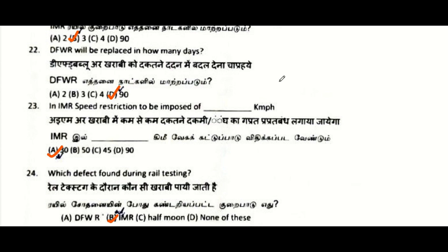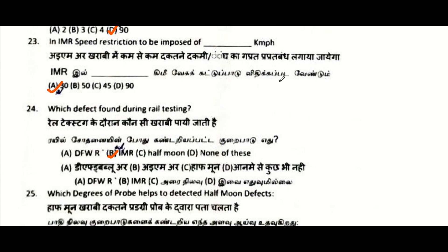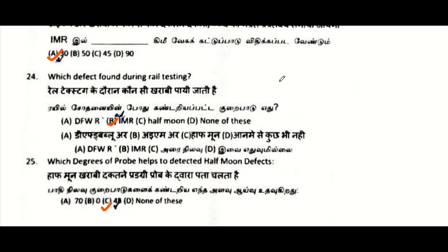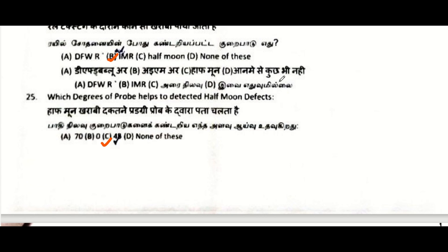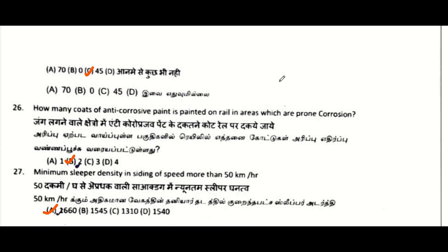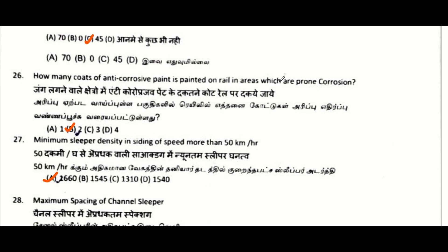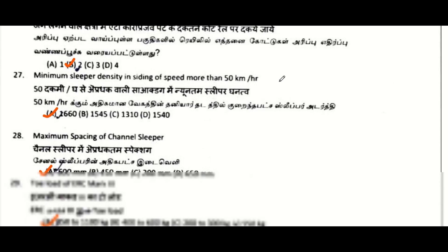Which defect is found during rail testing? During rail testing the right option is IMR. Which degree of probe helps to detect half moon defect? Half moon defect is detected by 45 degrees.